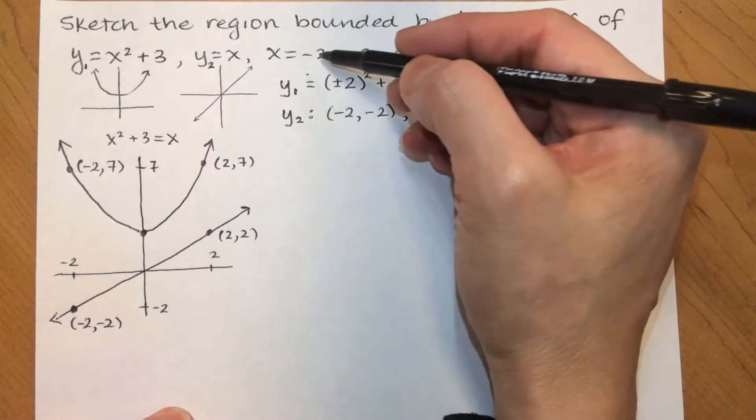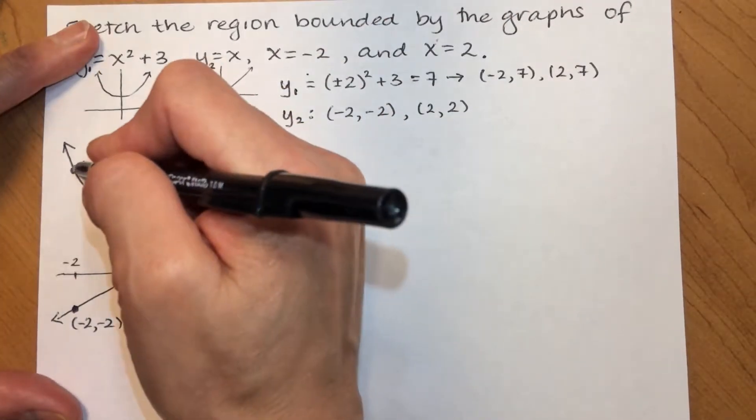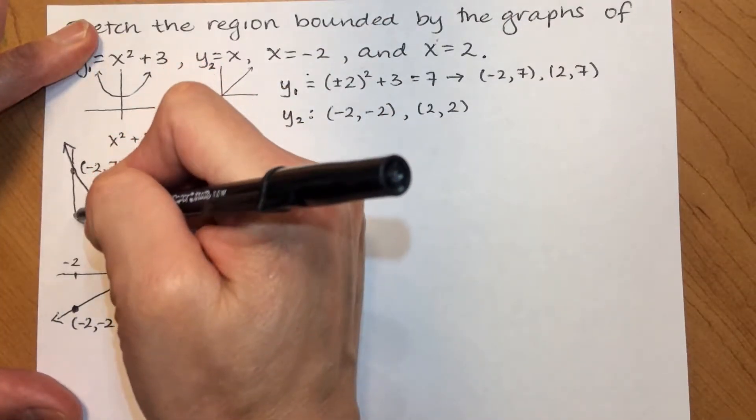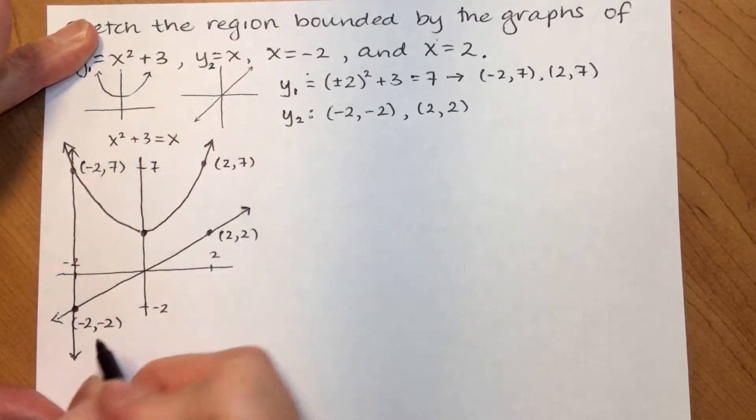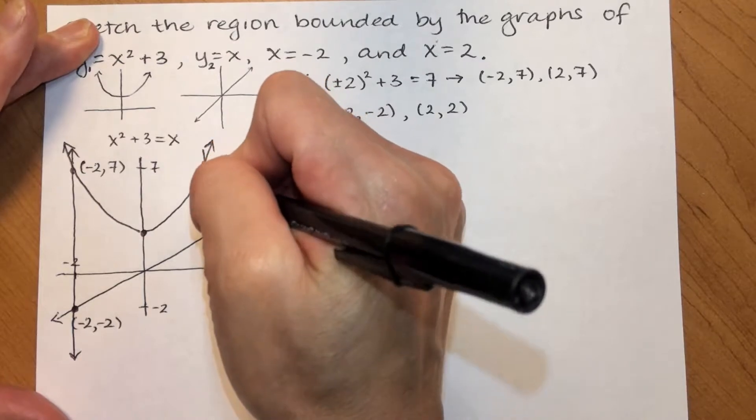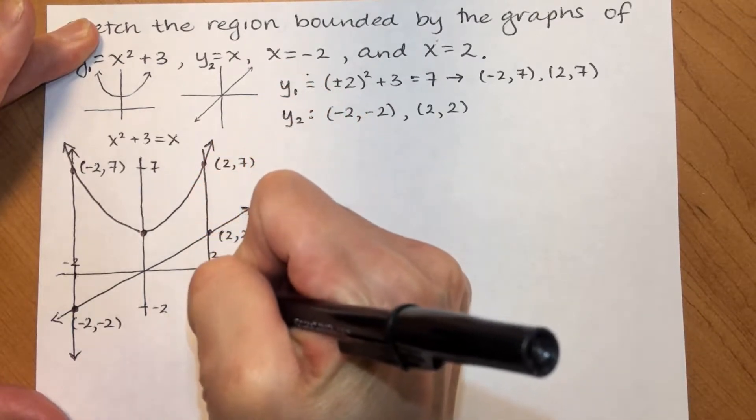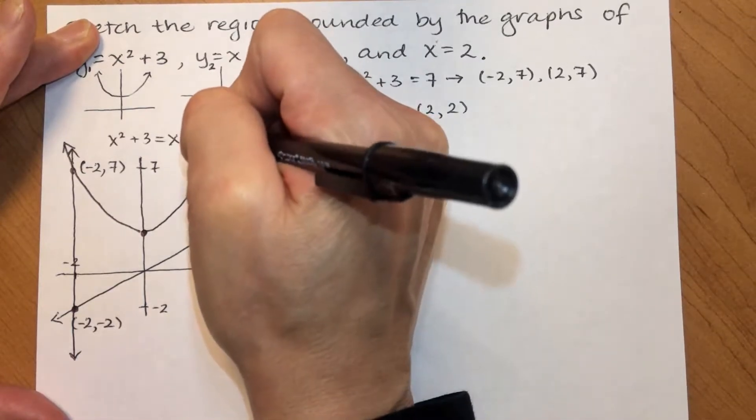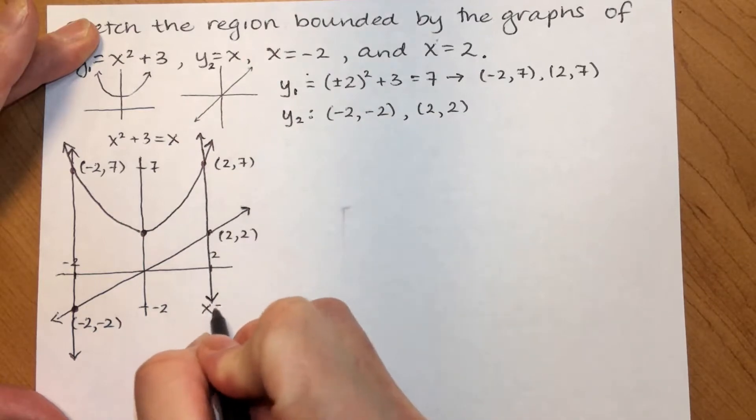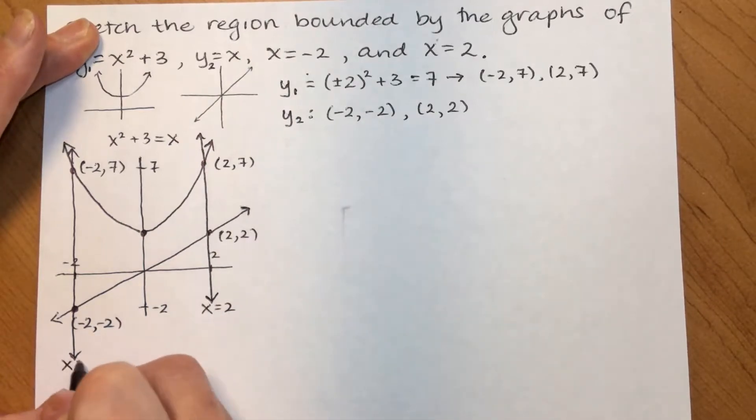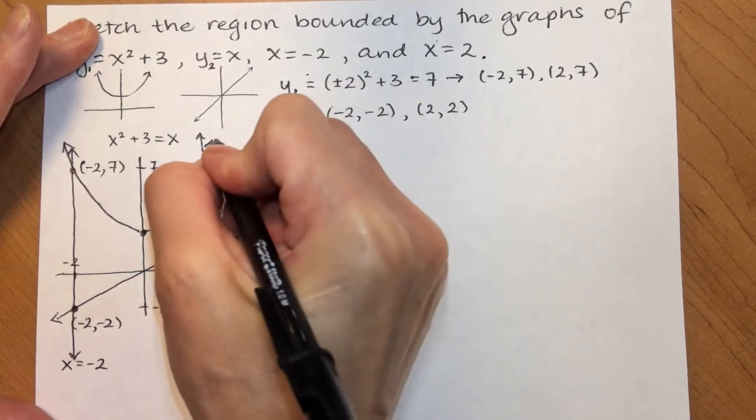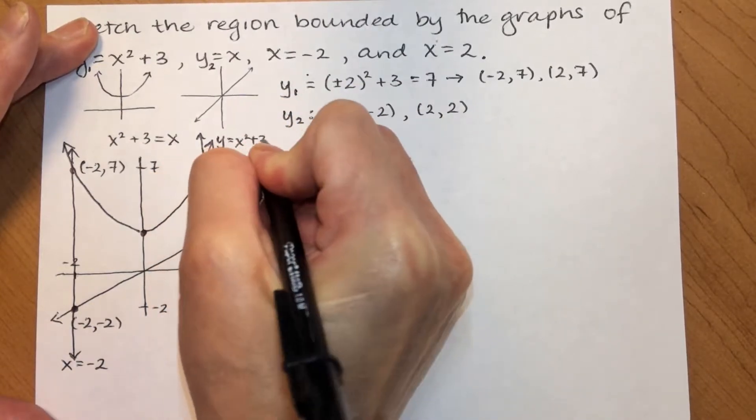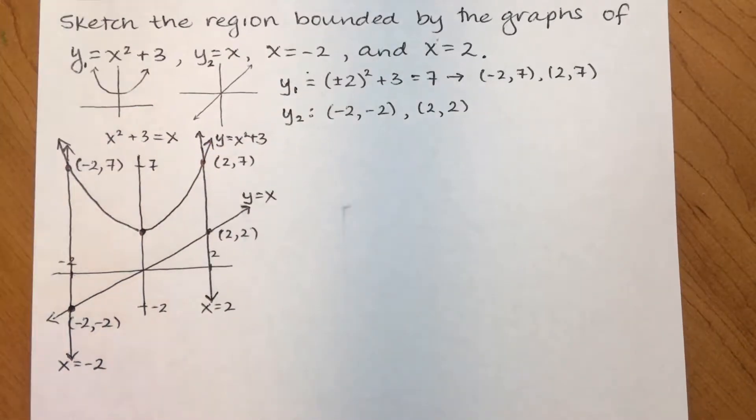Then, I also need the lines x equals negative 2. So, this is x equals negative 2, vertical line where x is negative 2, and x is 2. Vertical line where x is 2. Okay. So, this was y equals x. And, this parabola is y equals x squared plus 3.